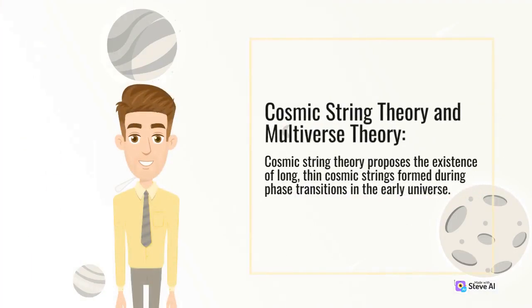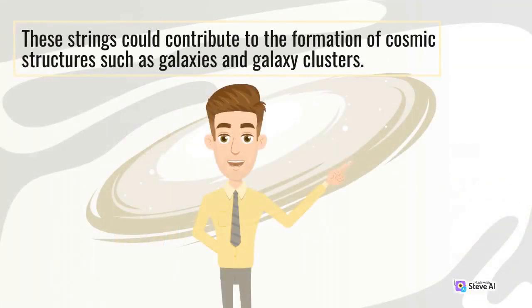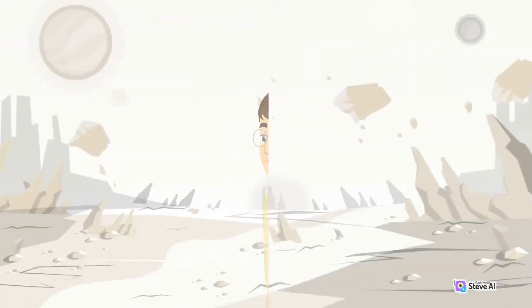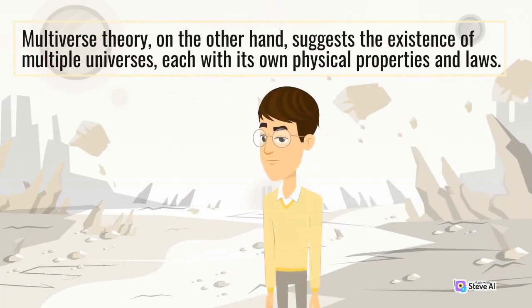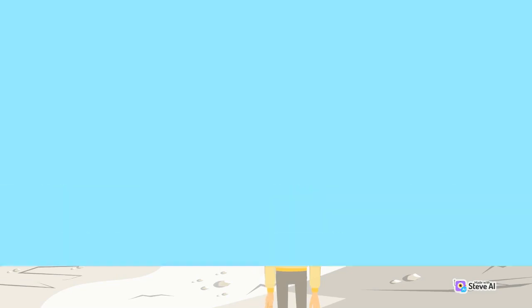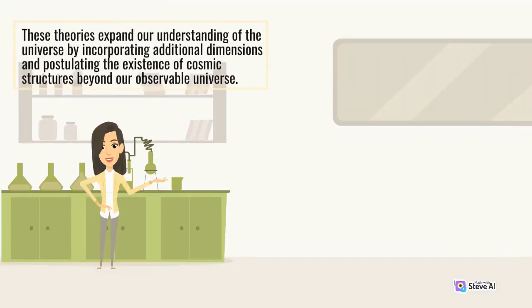Cosmic String Theory, each with its own physical properties and laws, expands our understanding of the universe by incorporating additional dimensions and postulating the existence of cosmic structures beyond our observable universe.